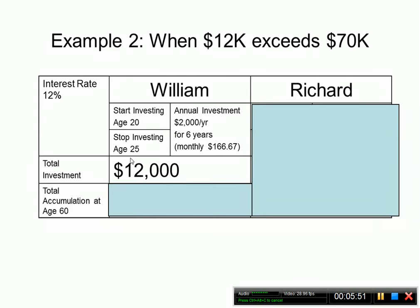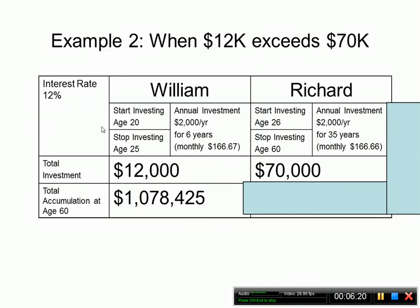William started investing early and also stopped early. He started investing at age twenty and stopped at age twenty-five, investing $2,000 per year — about $166.67 per month — for just six years. His total investment at the end of that period was $12,000. He did not withdraw this money; instead he let it sit at a twelve percent interest rate, and by age sixty he had over $1,078,000.